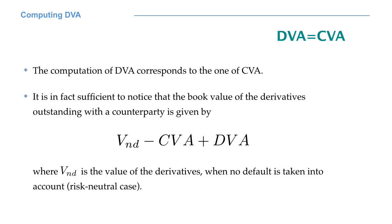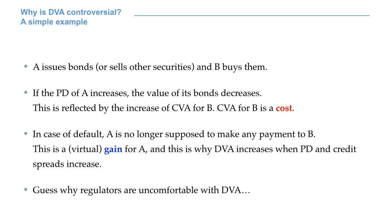The computation of DVA essentially mirrors the one of CVA. In absolute terms, DVA equals CVA — again, the two sides of the same coin. Given the true value of a derivative, if we remove CVA and DVA, what remains is the risk-neutral value. DVA is controversial because it may allow banks to have paper profits on their books. Let's consider a simple example.